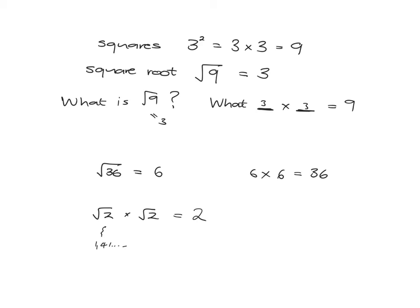If you take root 5 times root 5, you'll get 5. If you take root 100 times root 100, you'll get 100. If you take root 1002 times root 1002, you'll get 1002.